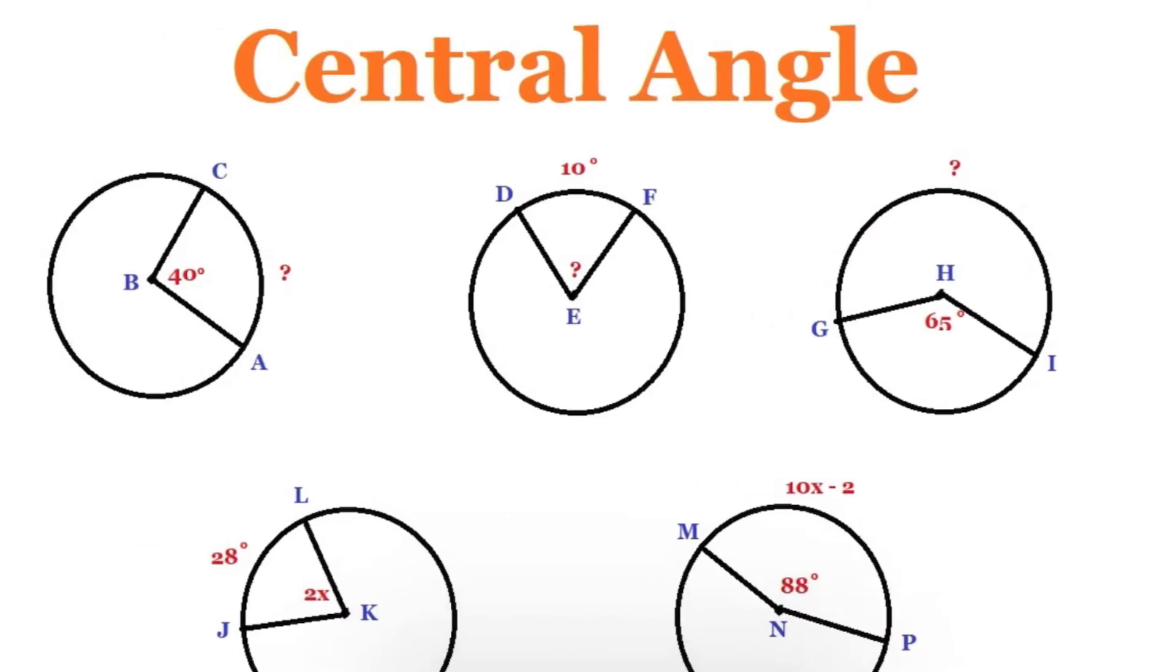So we know with a central angle, the corresponding arc is the same degree. Let's take a look. In this example, the angle is 40 degrees, so the arc will also be 40 degrees.